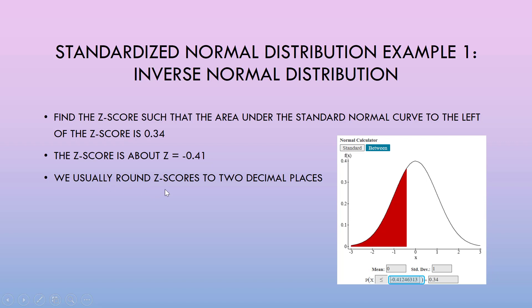Notice that we usually round z-scores to two decimal places. The value negative 0.41 is also the line that divides the red shaded area from the white unshaded area. Let's do another example.